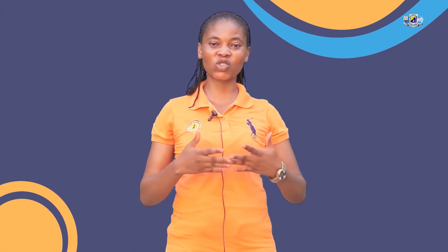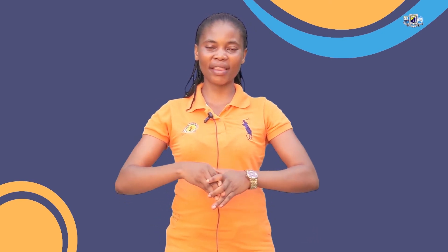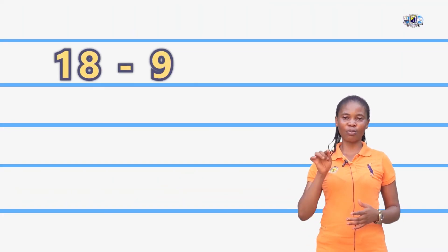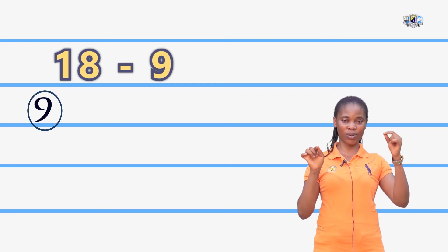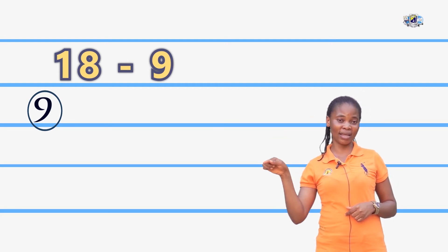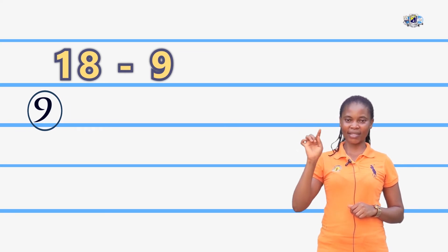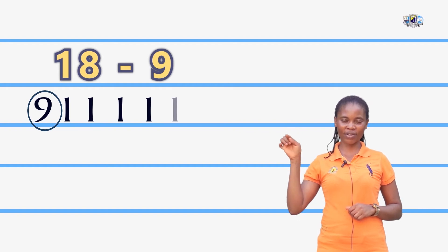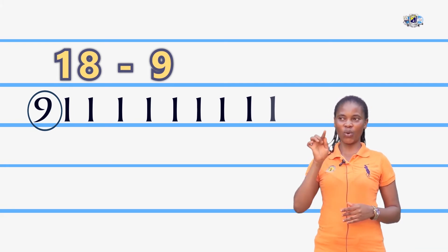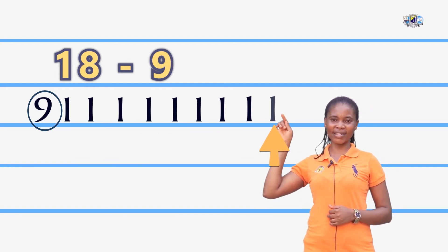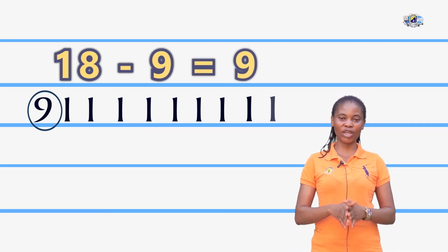Next is subtraction within 20 sprints. We are going to solve them together. 18 minus 9: pull down your 9, circle your 9, touch your 9 and say it out. We count on from 9 to 18: 9, 10, 11, 12, 13, 14, 15, 16, 17, 18. Now let's count what we have: 1, 2, 3, 4, 5, 6, 7, 8, 9. So 18 minus 9 equals 9.